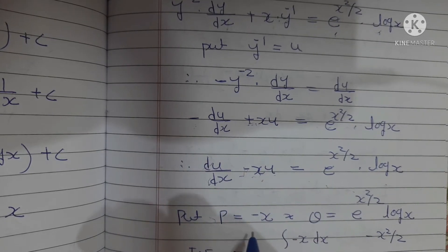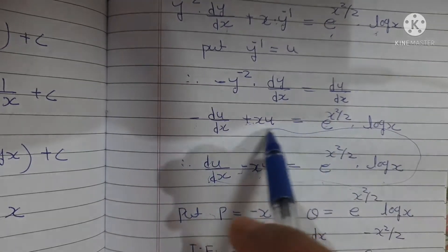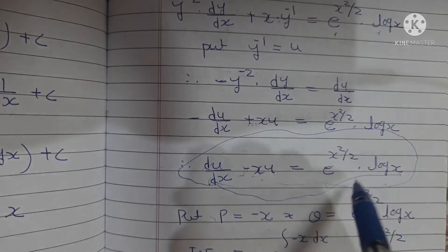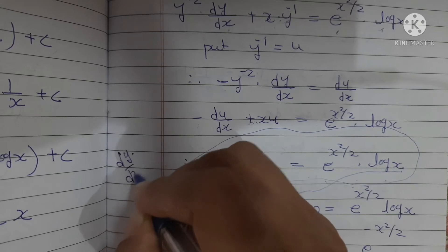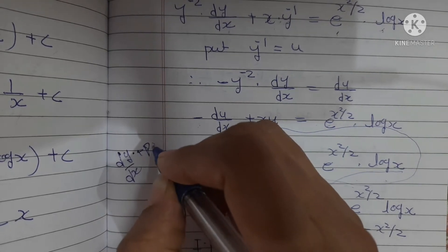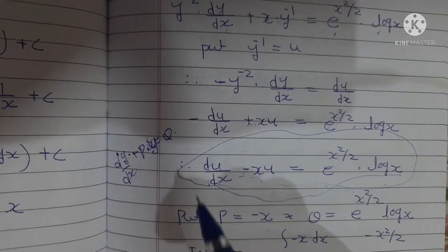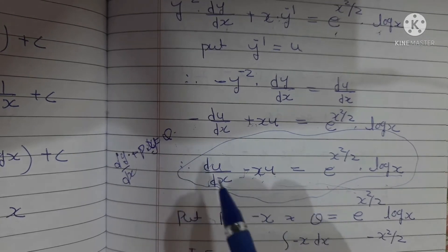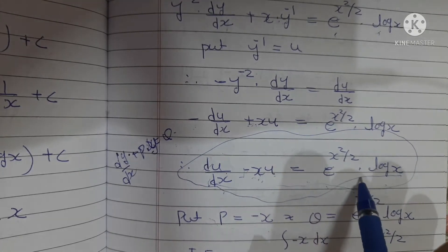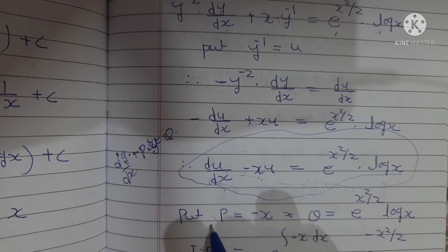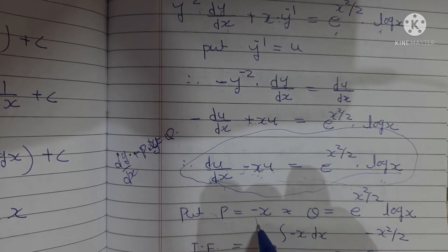This is now a linear differential equation. The standard linear form is du/dx + P·u = Q. Rearranging our equation: du/dx - x · u = -e^(x²/2) · log(x). Multiplying through by -1 gives: du/dx - x · u = e^(-x²/2) · log(x).